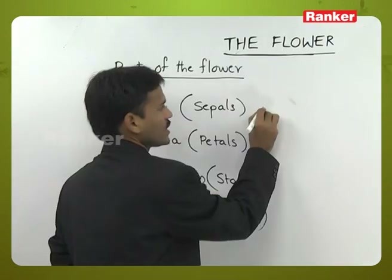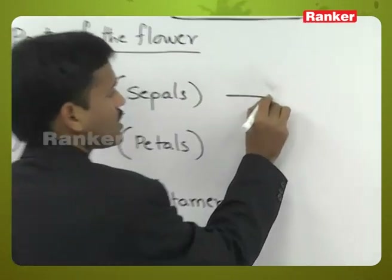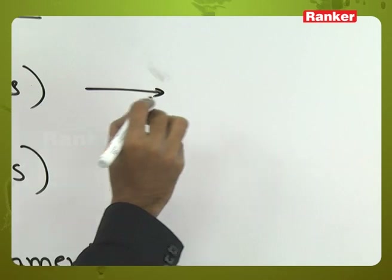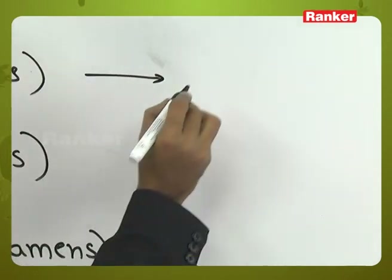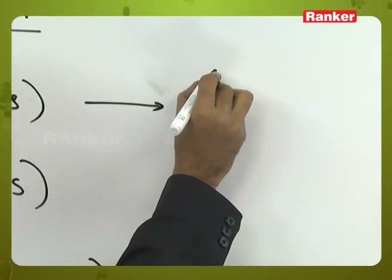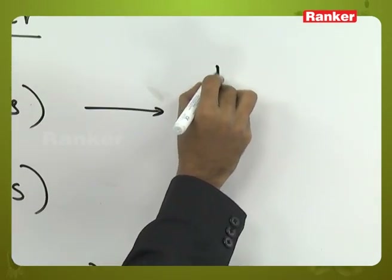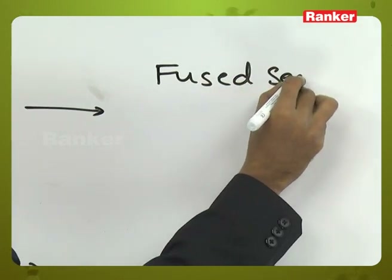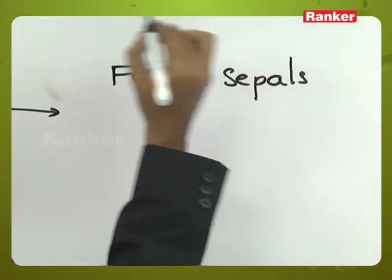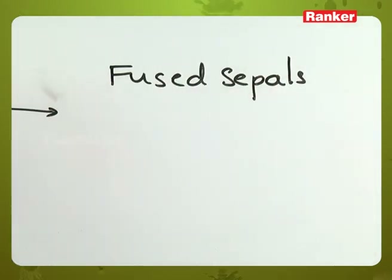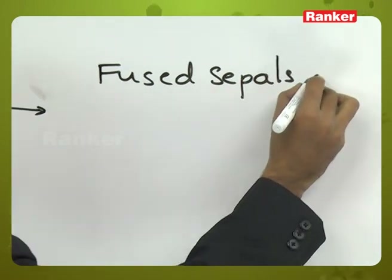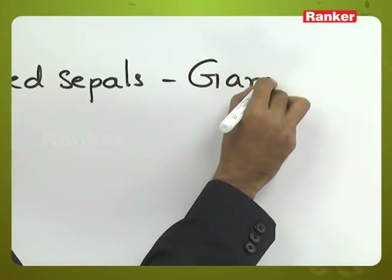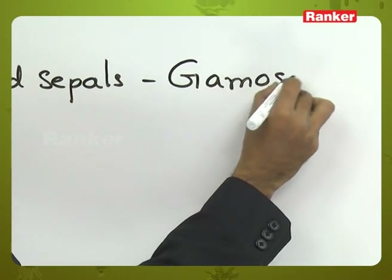Calyx sepals can be fused or free. If all the sepals are fused, that condition is called gamosepalous.